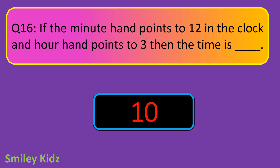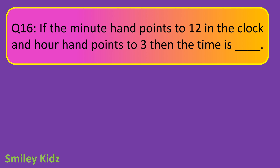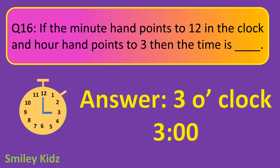Question number 16. If the minute hand points to 12 on the clock and the hour hand points to 3, then the time is dash. Your time starts now. And your time is up. The right answer is 3 o'clock. If the minute hand points to 12 and the hour hand points to 3, then the time is 3 o'clock.